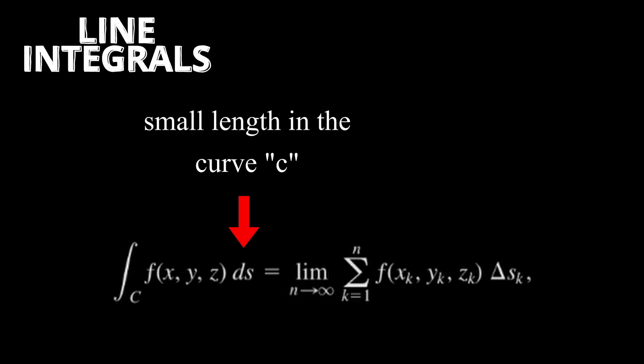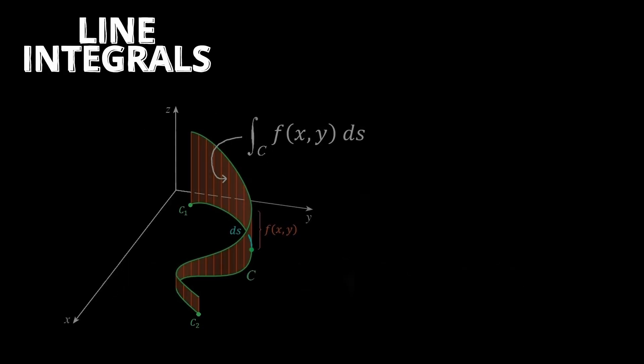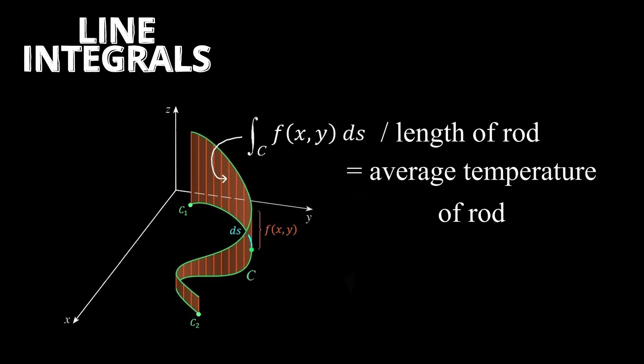So for example, if you're considering the temperature distribution along a metal rod bent into a curve, the line integral divided by the length of the rod would give you the average temperature of the rod.